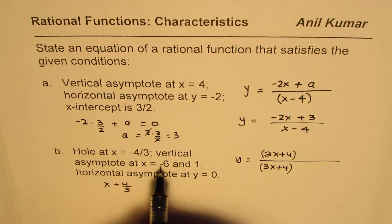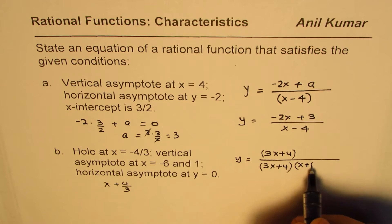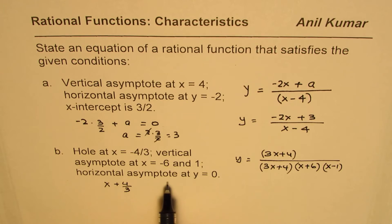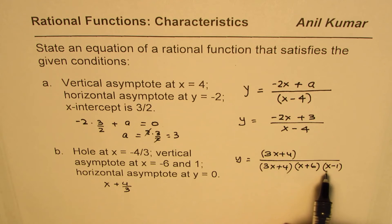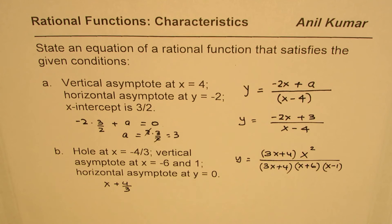Vertical asymptote at x equals minus 6 means x plus 6 is a factor, and at x equals 1 means x minus 1 is a factor — both in the denominator. Horizontal asymptote at y equals 0 means the degree of the numerator must be less than the denominator. The denominator is now a cubic function, so to satisfy this, the numerator must be a lower degree, achieved by multiplying appropriately. That gives the equation satisfying all the given conditions.